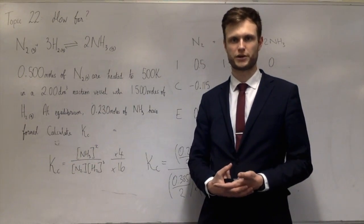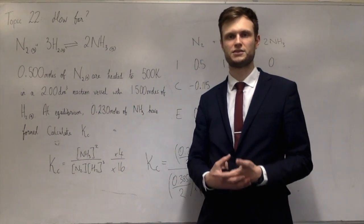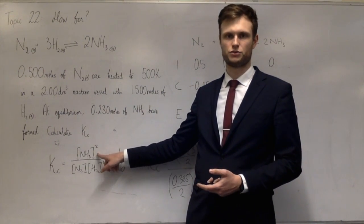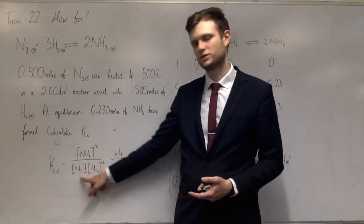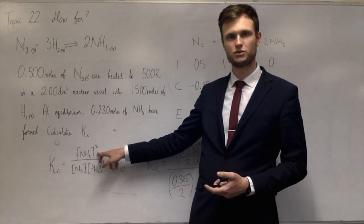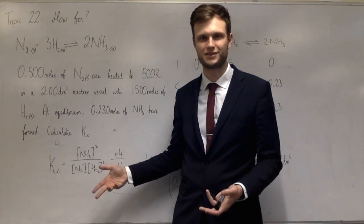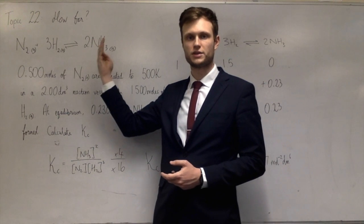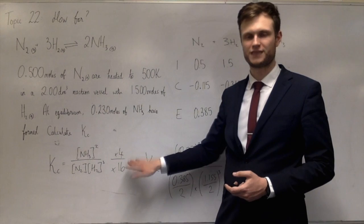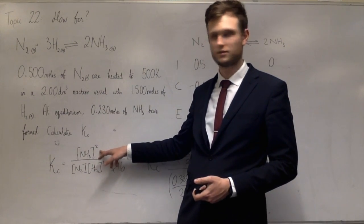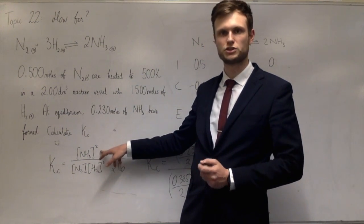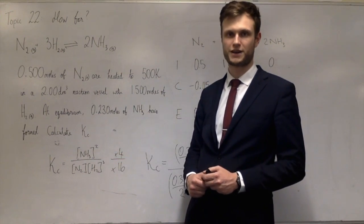But KC isn't affected by pressure — only by temperature. So the reaction deals with this by increasing the concentration of ammonia and decreasing the concentrations of both reactants. When [NH₃] increases and the reactants decrease, that is exactly shifting the equilibrium to the right — making more ammonia and less reactants, so the numerator increases and the denominator decreases.